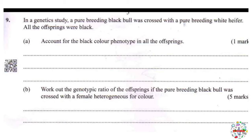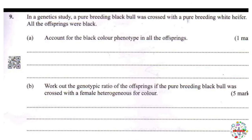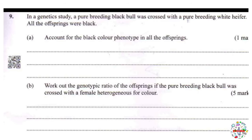Question 9: in a genetic study, a pure breeding black bull was crossed with a pure breeding white heifer. All the offsprings were black. We have two parents — a black bull and a white female — and all offspring are black with no trace of white in their phenotype. Whenever you see such a case, you need to know this is an example of complete dominance.